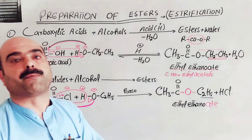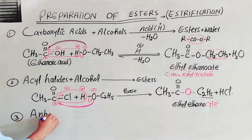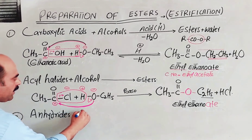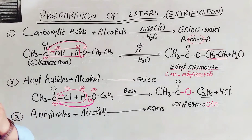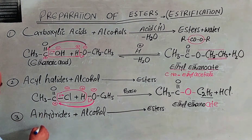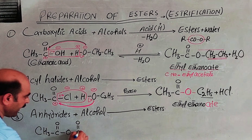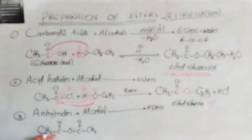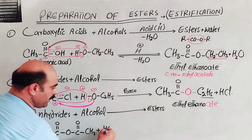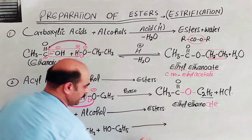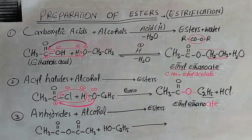The third preparation method uses acid anhydrides. In the anhydride, look at the example: CH3-C(=O)-O-C(=O)-CH3, acetic anhydride. The acid anhydride has an oxygen atom connecting two acid groups. The reaction of the anhydride with alcohol proceeds through a nucleophilic addition. The partial positive carbon and partial negative oxygen allow the alcohol oxygen's lone pair of electrons to attack the partial positive carbon.